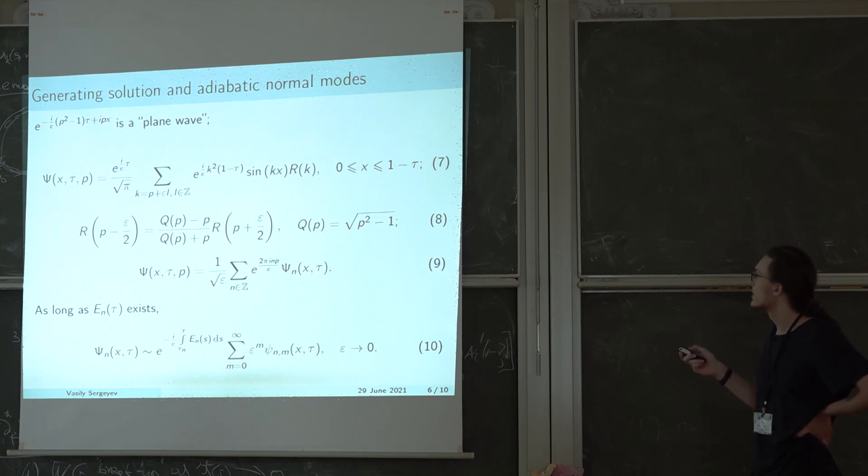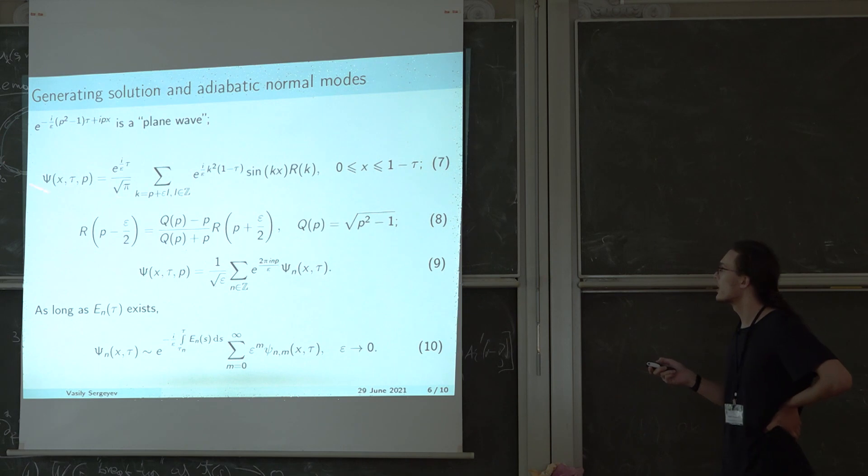If the coefficient r solves this difference equation on the complex plane, then this sum formally solves our problem. And if additionally, the solution of this difference equation decays sufficiently quickly at infinity, then this generating solution is an actual solution of the problem because then this sum converges.